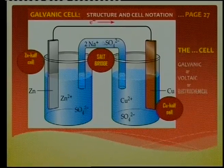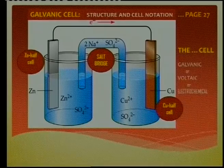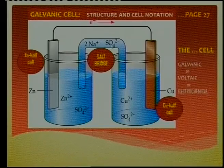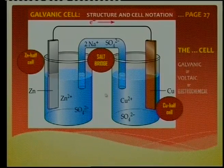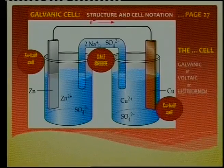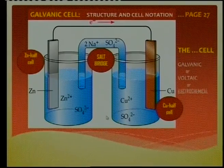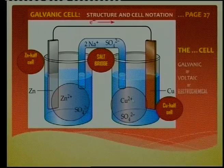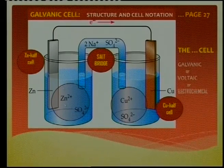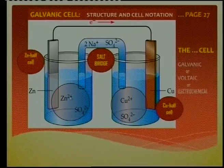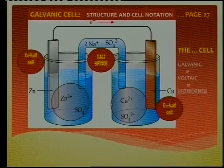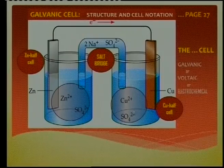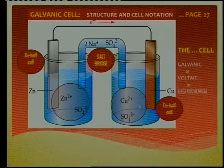In a salt bridge we must have a soluble salt — like sodium. Remember rule number one and rule number three: all sulfates are soluble, especially sodium, potassium, and ammonium. The two salts in the half cells are the electrolytes. This is zinc sulfate as the electrolyte on one side, and copper sulfate as the electrolyte on the other side.